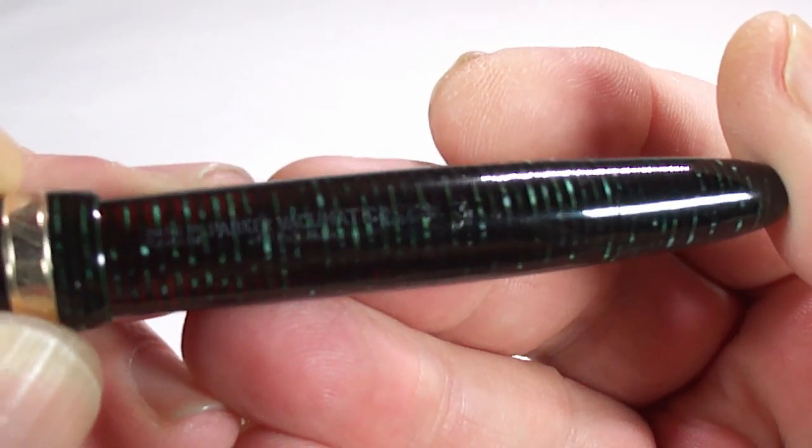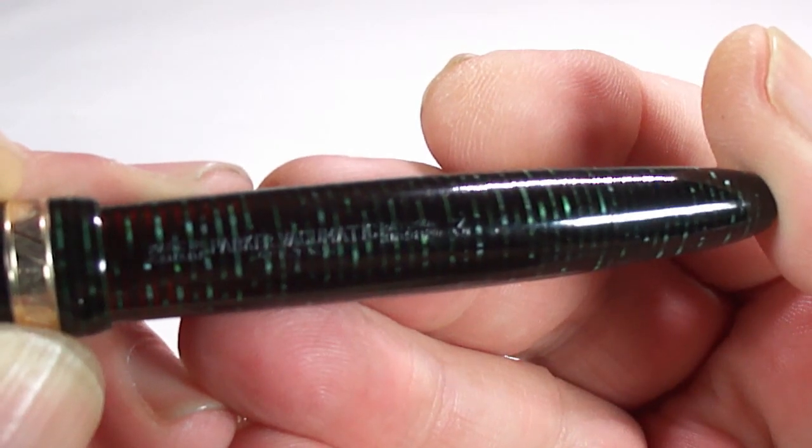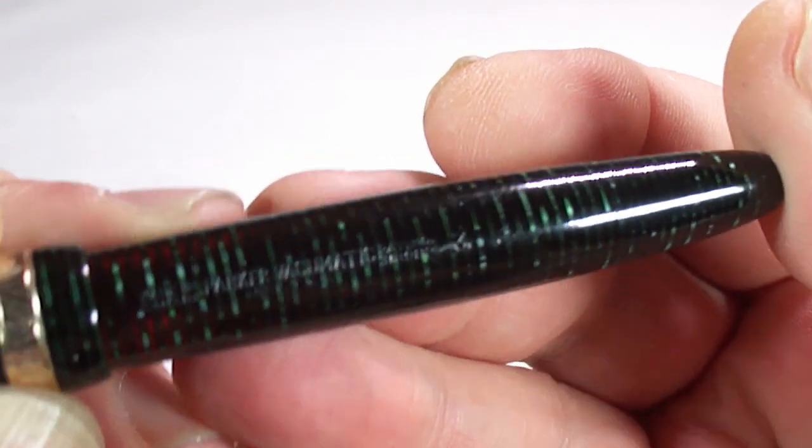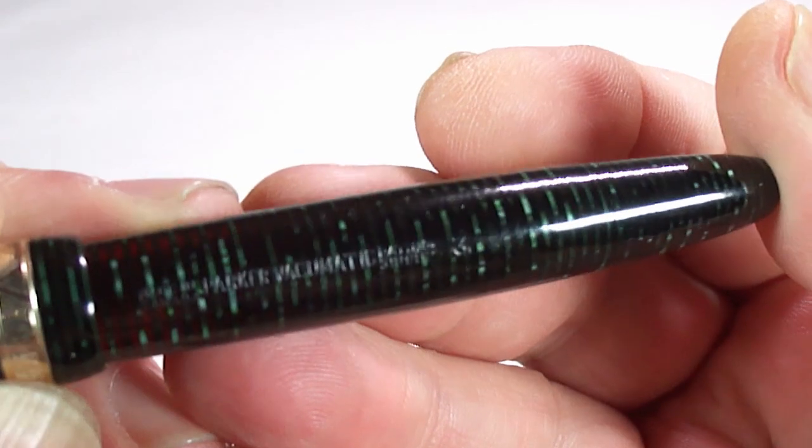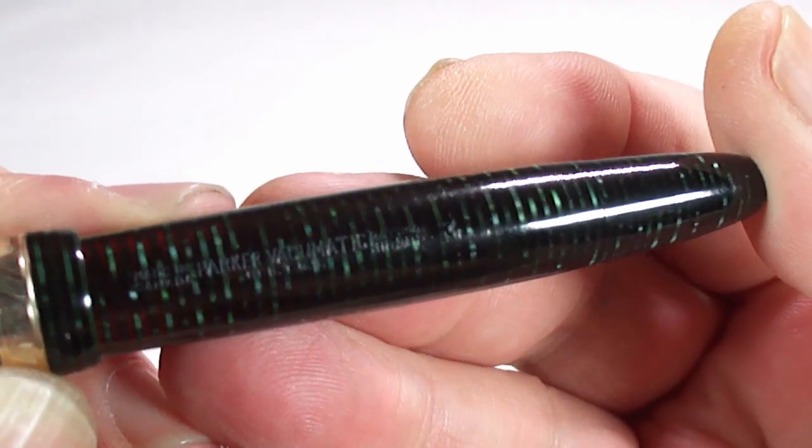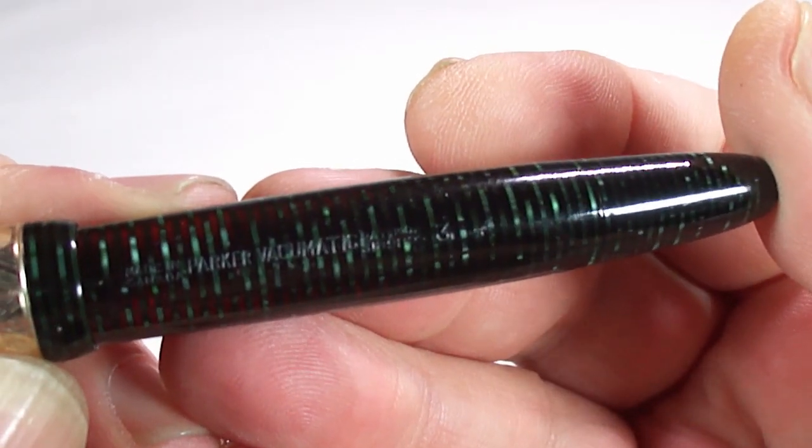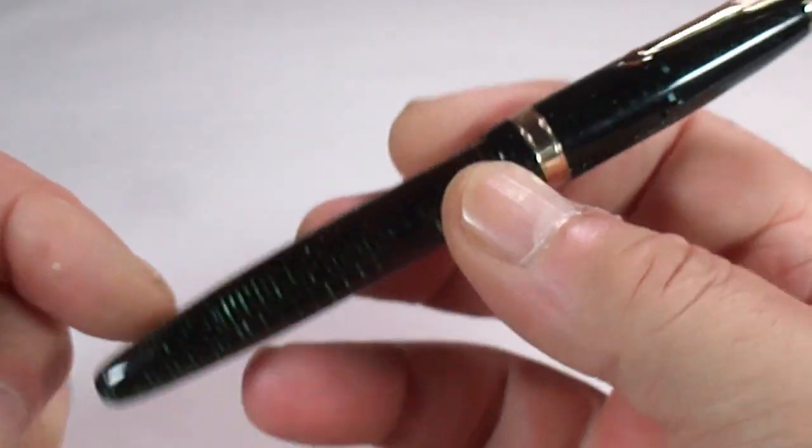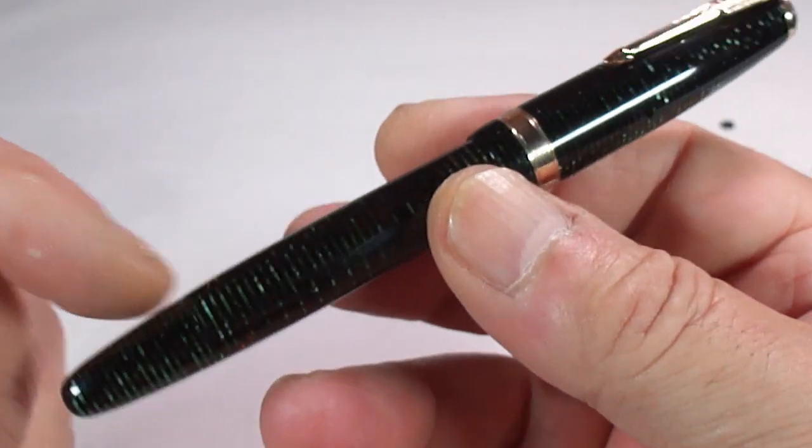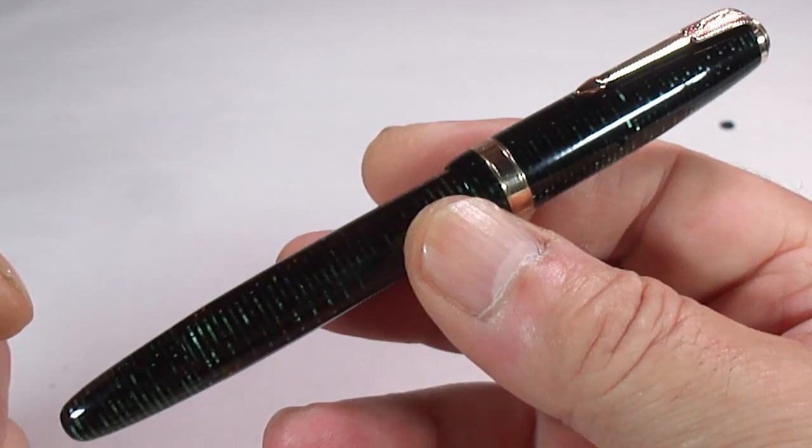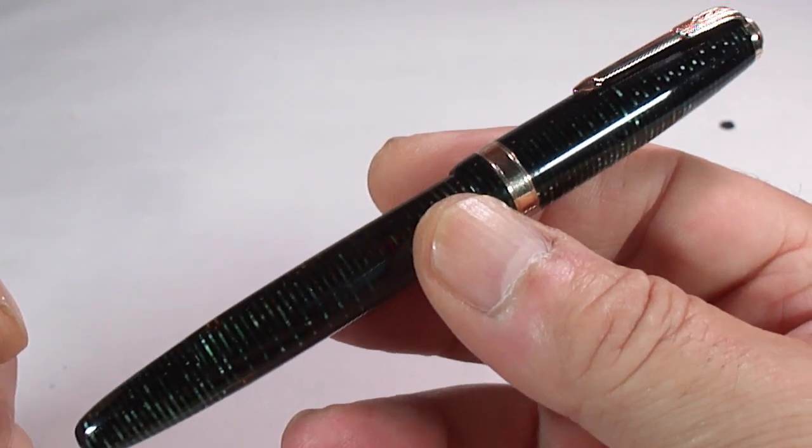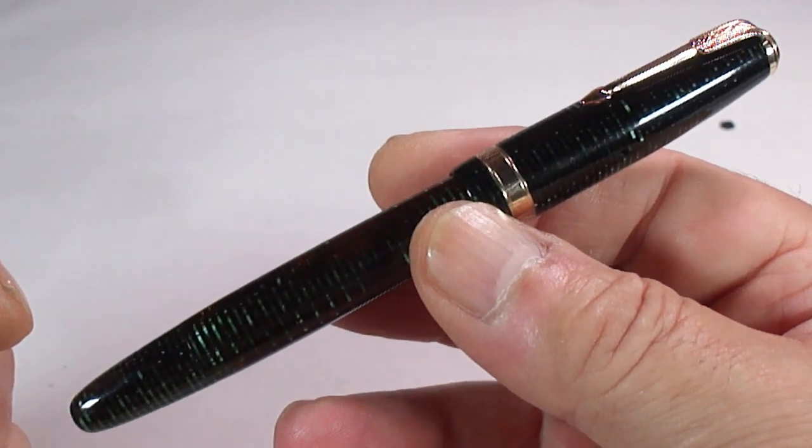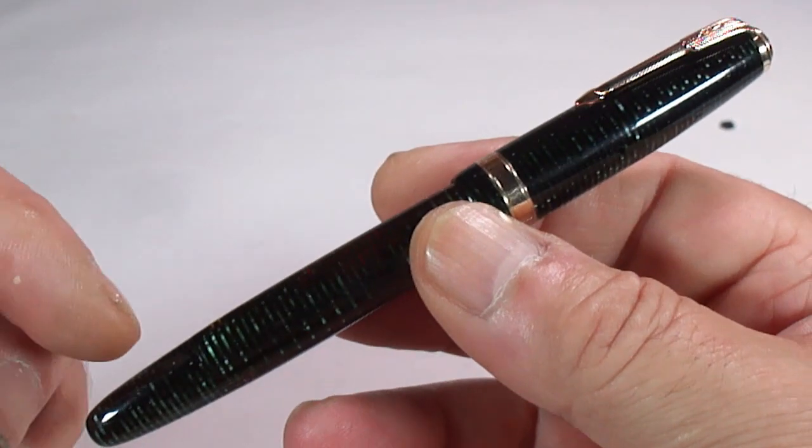Then it's got a pattern number to the right and then to the very right there, it's got a date number, number three. So what does the number three tell us? It tells us that this pen was made in 1943.